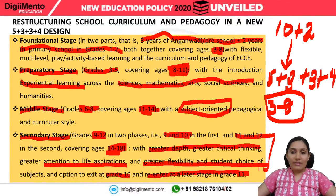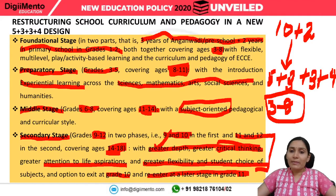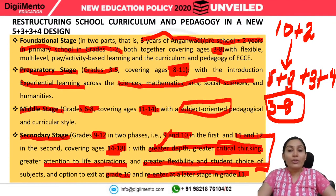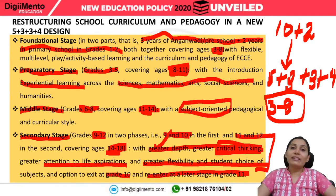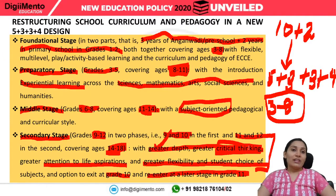At all stages, experiential learning will be adopted — hands-on training, art-integrated, sports-integrated, and storytelling. Classroom transactions will shift towards competency-based learning. Examinations check critical thinking, but unfortunately until now there has been no curriculum that meets these requirements.